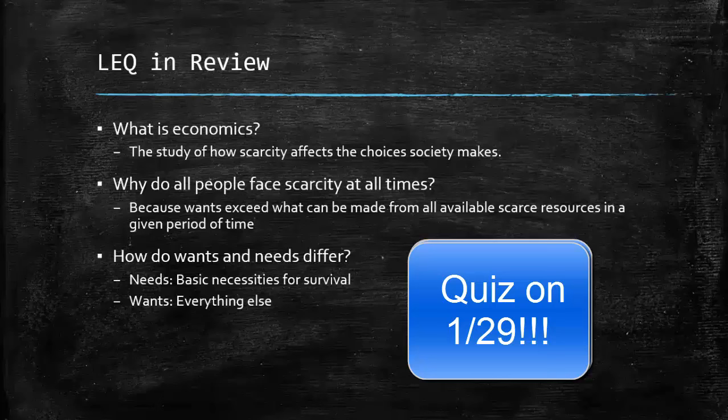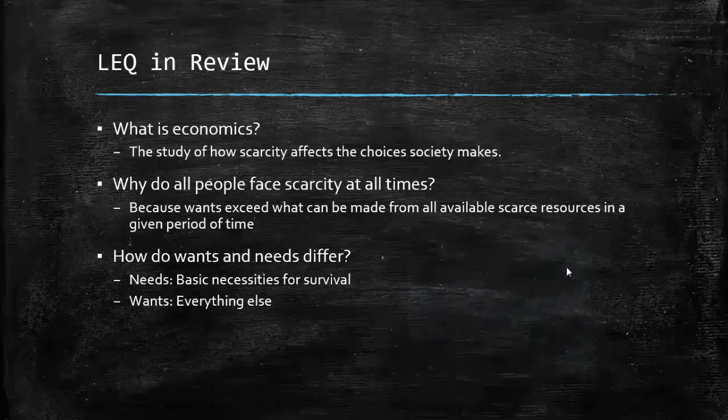LEQ number two — why do all people face scarcity at all times? Because wants exceed what can be made from all available scarce resources in a given period of time. Because we want more than there are resources for, and more than there is time for. LEQ number three — how do wants and needs differ? Needs: what you need to stay alive. Wants: everything else.